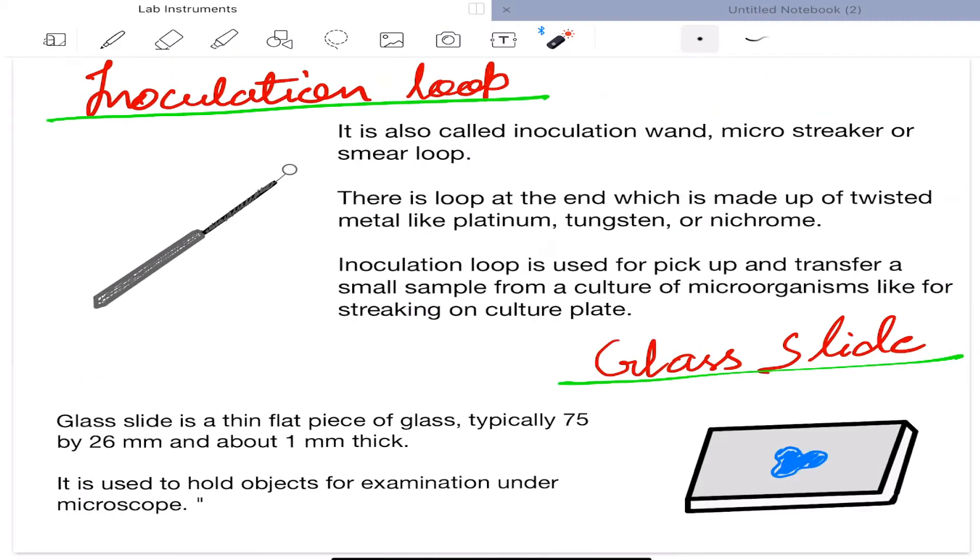Next is inoculation loop. It is also called inoculation wand, microstreaker, or smear loop. There is a loop at the end which is made up of twisted metal like platinum, tungsten, or nichrome. Inoculation loop is used for pickup and transfer of a small sample from a culture of microorganisms like for streaking on culture plate.